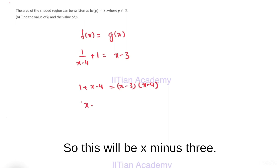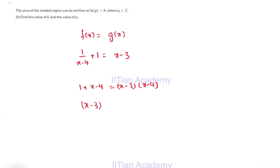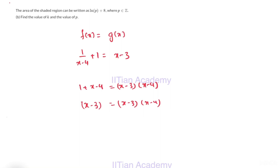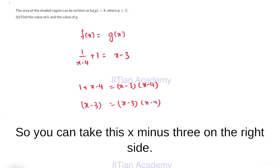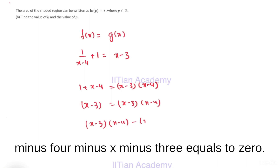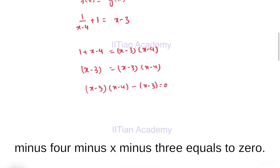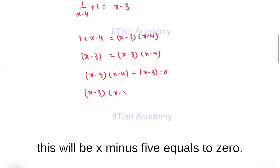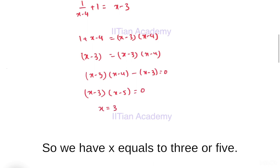This is (x-3) multiplied by (x-4). You can take this (x-3) to the right side, giving (x-3)(x-4) - (x-3) = 0. Taking (x-3) common, this will be (x-3)(x-5) = 0.